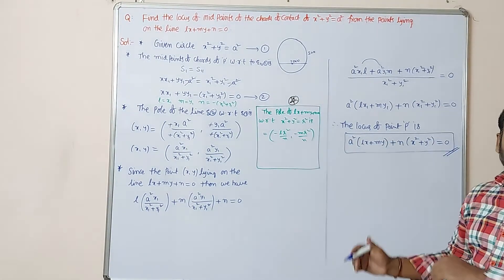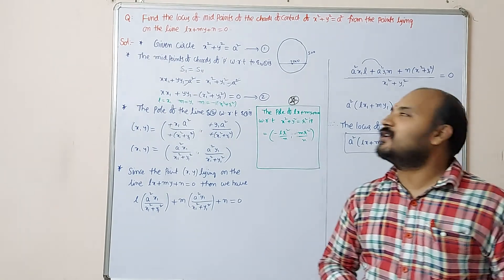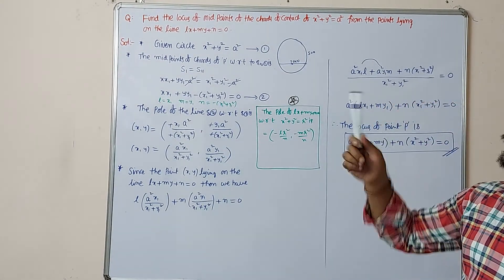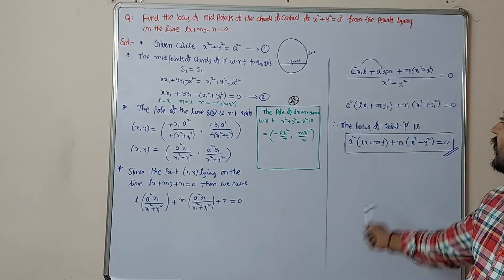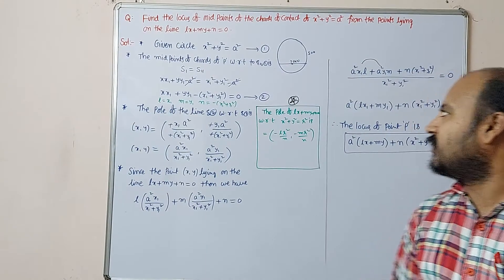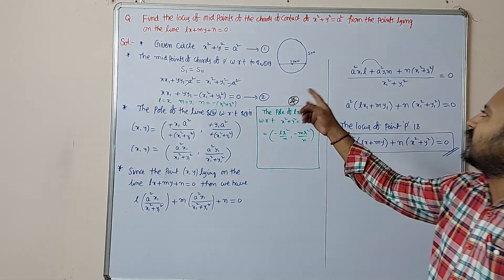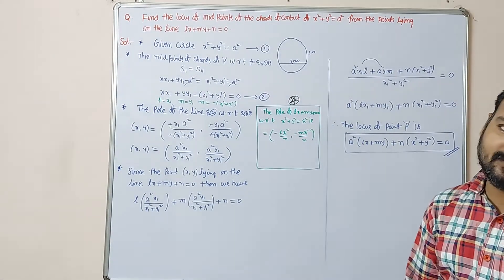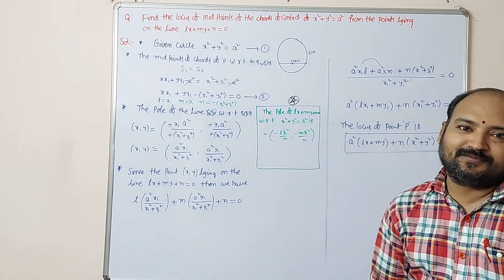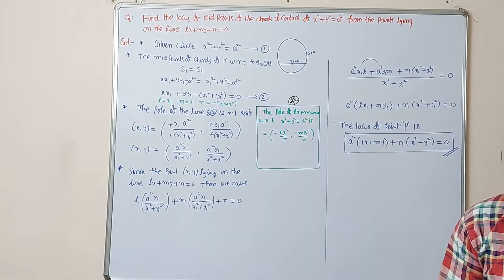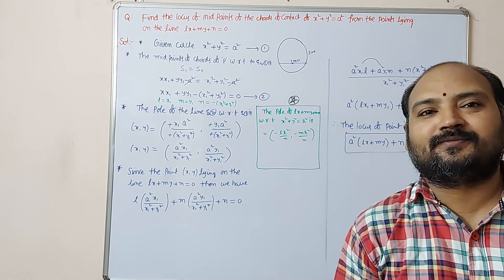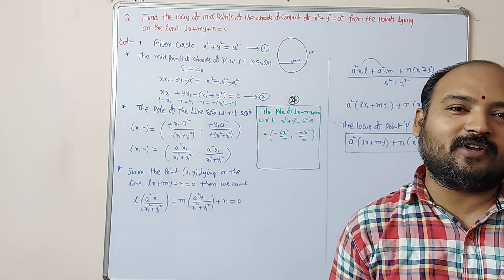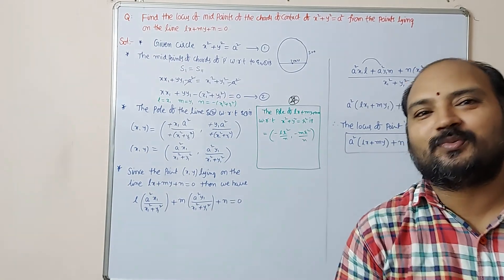This is the required locus. That is how we find the locus — replace the assumed locus point. I hope you understand. We'll take another example in another video. Thank you.